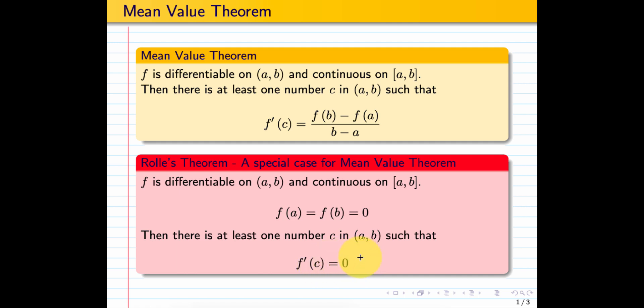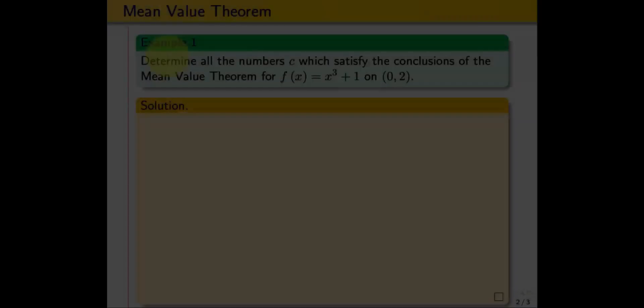If you remember, this is the extremum point, maximum or minimum. If for all x in (a, b), f'(c) equals 0, it means that f is constant on (a, b), a straight line.